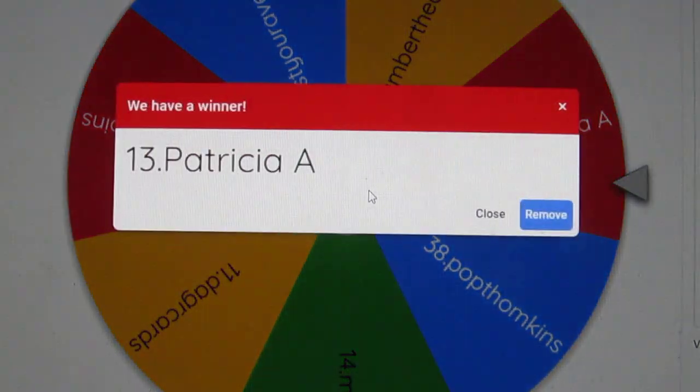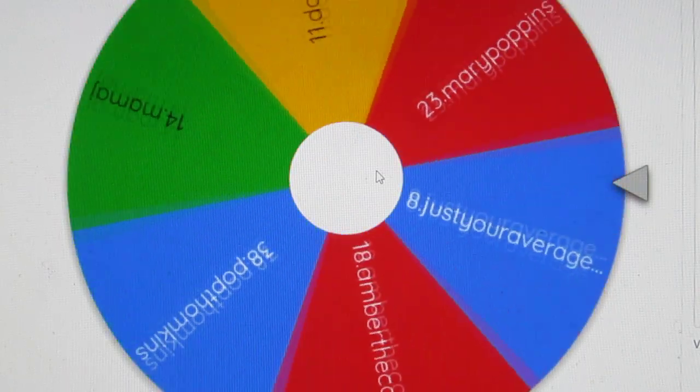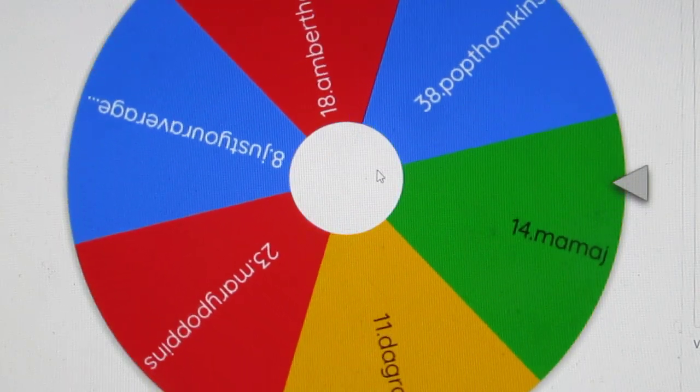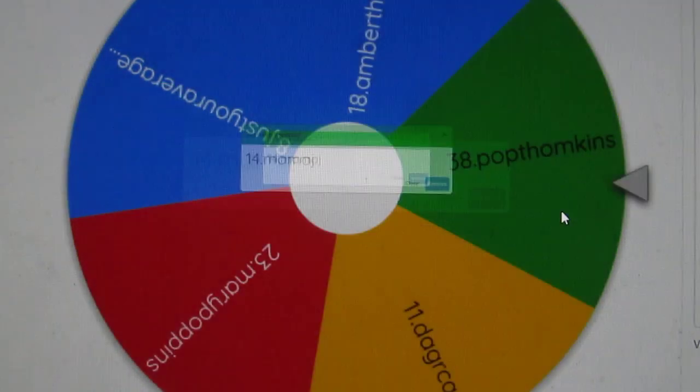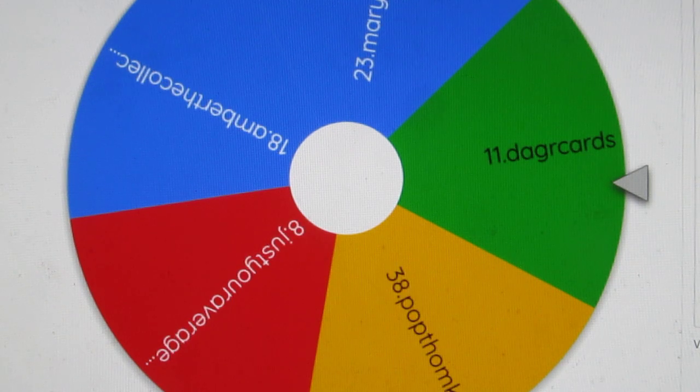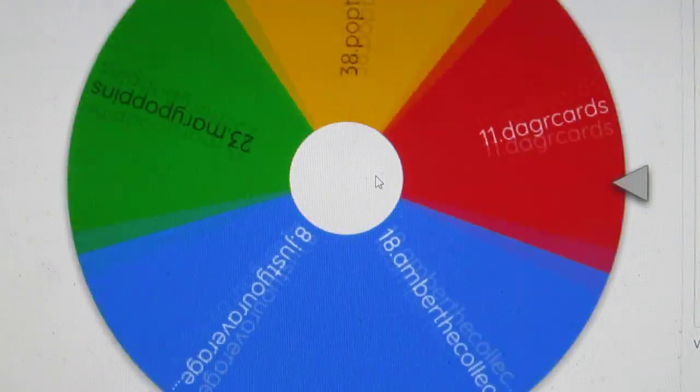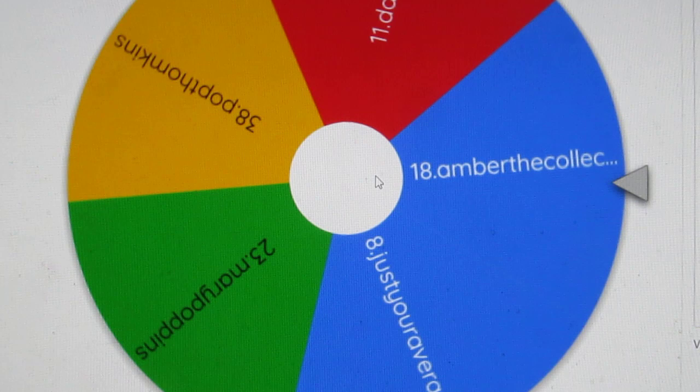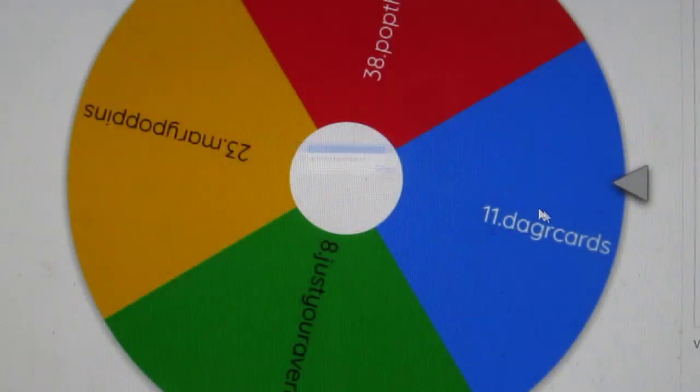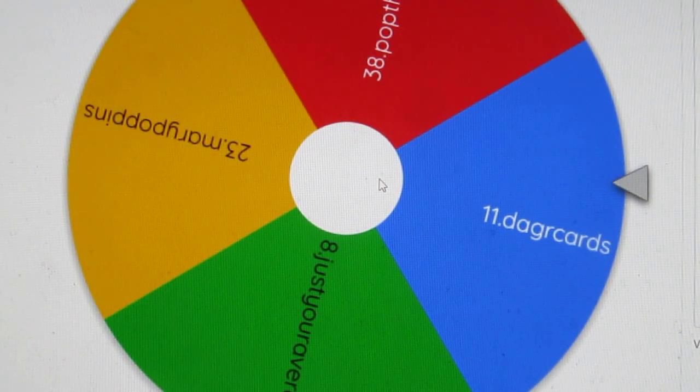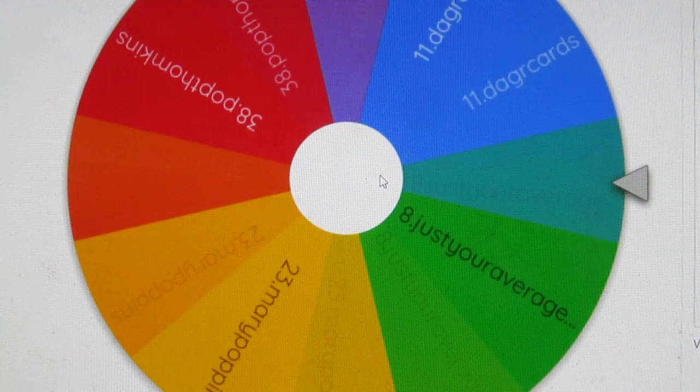Patricia A I'm so sorry, she is out. Mama J is out of here and we're shuffling one, two, three, and four for the last ones, here we go. Amber the Collector. Dagger, Pop Tompkins, Mary Poppins, and just your average geeks are the remainder. Who's going to walk away a winner?